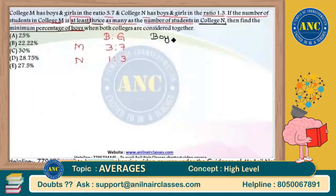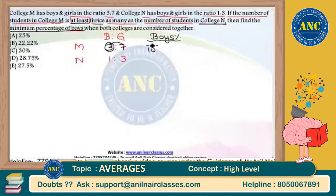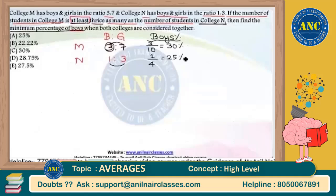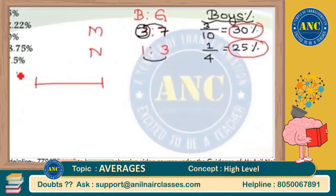I need to find the boys percentage — and specifically the minimum. Think logically: in College M, there are 3 boys and 7 girls, so 10 students total. Out of 10 students, 3 are boys, so the percentage of boys in College M is 30%. In College N, out of 3 + 1 = 4 students, 1 is a boy, so the percentage of boys in College N is 25%. So boys percentage lies in the range of 25% to 30%. If I draw a diagram: 25% is for College N and 30% is for College M.